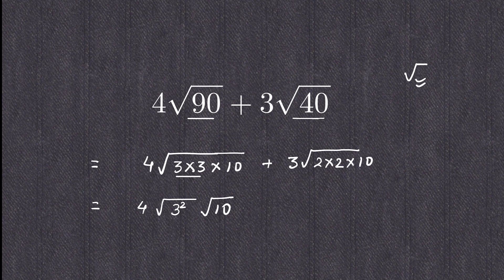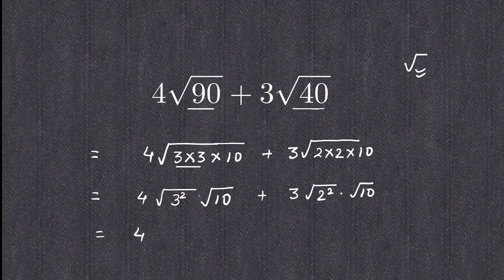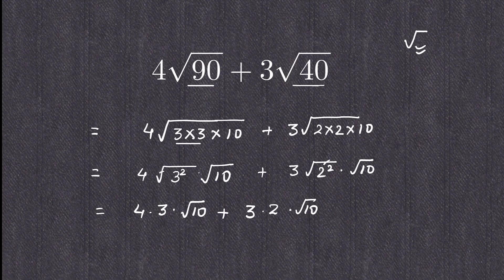This can be written as square root of 3² multiplied by square root of 10, plus square root of 2² multiplied by square root of 10. Now you can remove the square root from the perfect squares, giving us 4 × 3 × √10 plus 3 × 2 × √10.